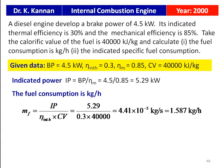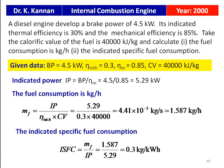Fuel consumption Mf equals IP divided by indicated thermal efficiency multiplied by calorific value: 5.29 divided by (0.3 × 40,000) equals 4.41 × 10⁻³ kilograms per second, which is 1.587 kilograms per hour. The indicated specific fuel consumption ISFC equals Mf divided by IP: 1.587 divided by 5.29 equals 0.3 kilograms per kilowatt-hour. So the answers are: mass of fuel equals 1.587 kg/hr and ISFC equals 0.3 kg/kWh.